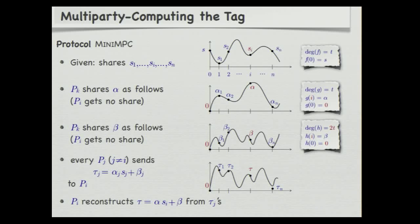Note that player P_K only needs to share alpha and beta once for all, due to batching and reusability — these sharings only need to be done once in order to authenticate a large number of shares. There are a couple of subtleties being ignored here.